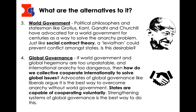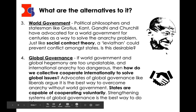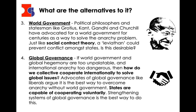So lastly, we have global governance itself. If all of those options are a bit too unpalatable, then the best system is the one we currently have — global governance. We do know that states are capable of cooperating voluntarily; they do it all the time. And if we don't want to give up our power and sovereignty to a world government, then perhaps the best thing to do is to work out how best we can cooperate — and that might be described as global governance.